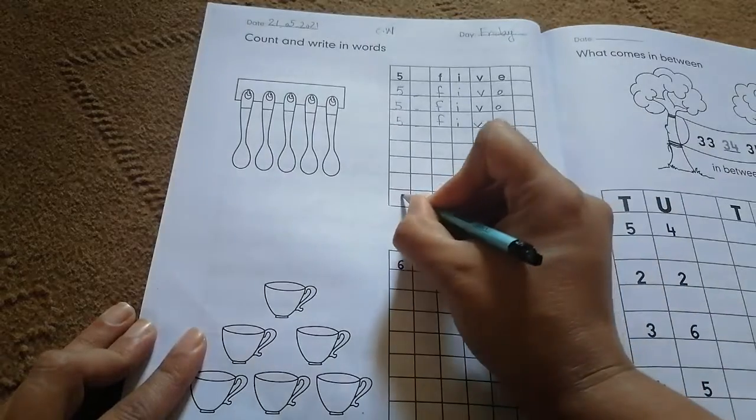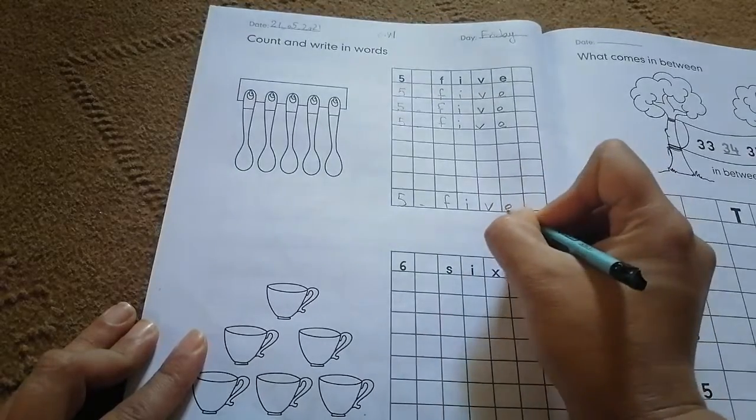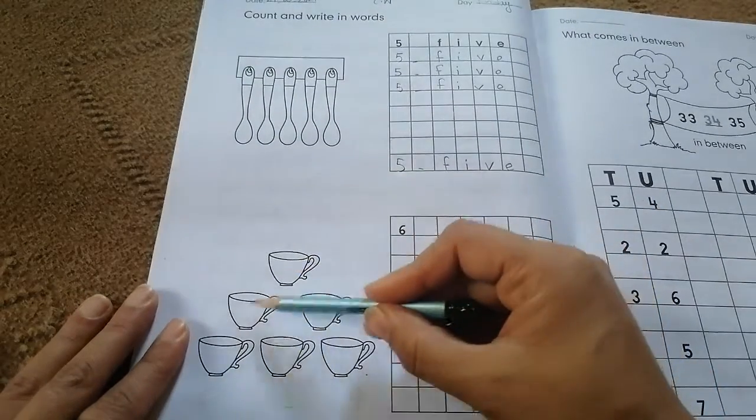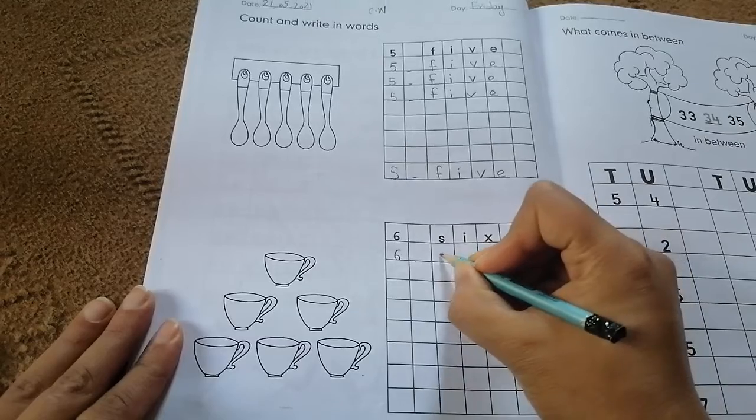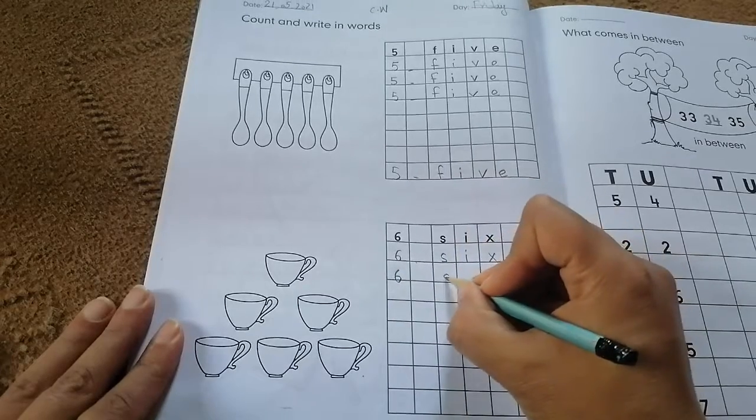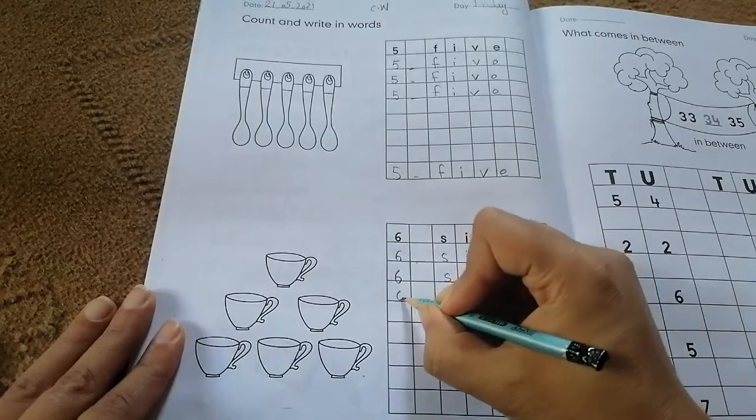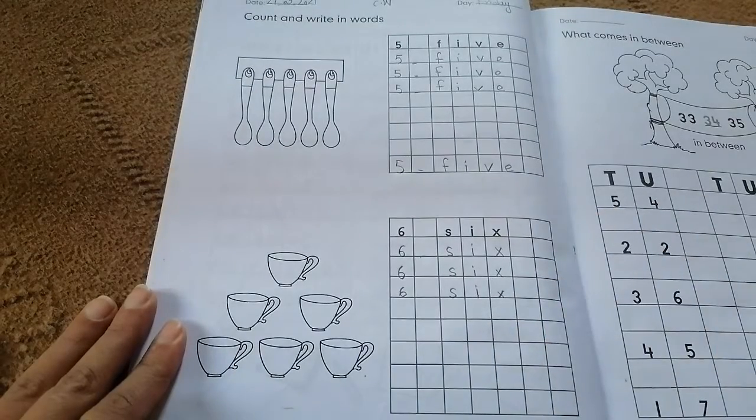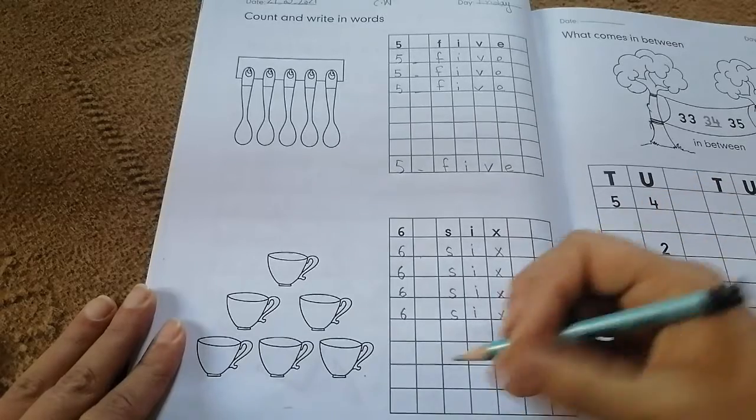F-I-V-E, five. Then move to the next number. Which number is this? Six. Count this: one, two, three, four, five, six. This is number six, S-I-X, six. Then write it on next number six, S-I-X, six, S-I-X, six. And next number S-I-X, six.